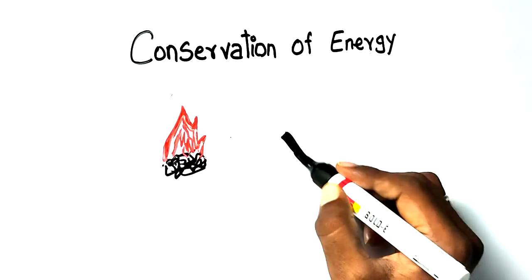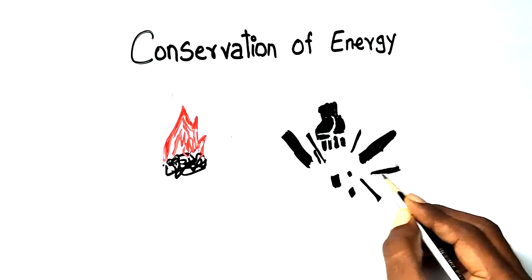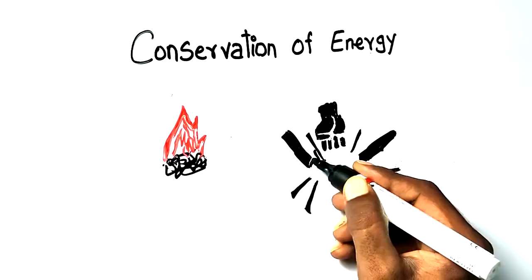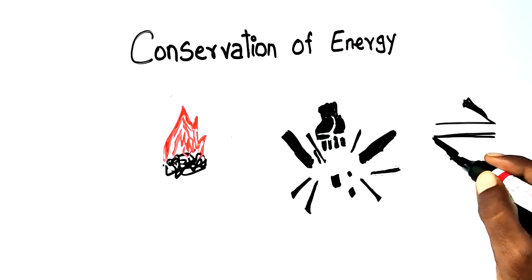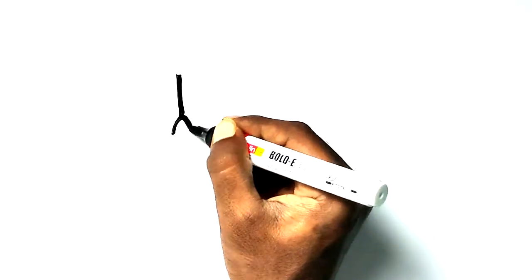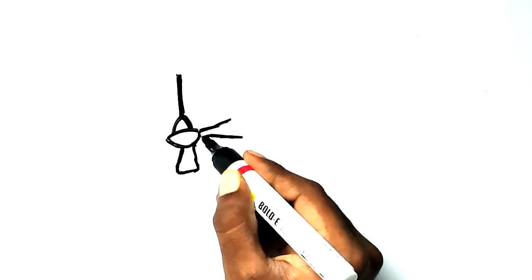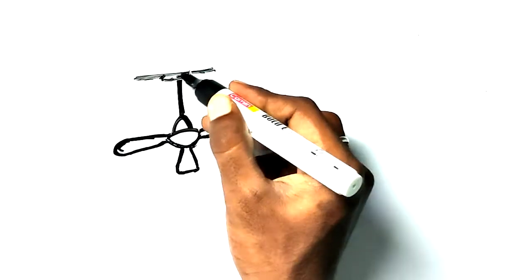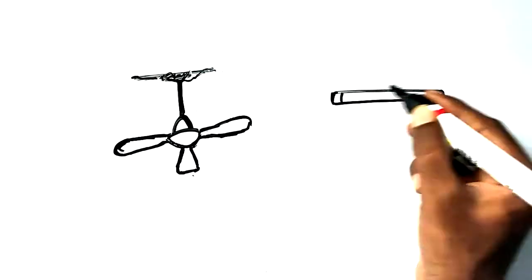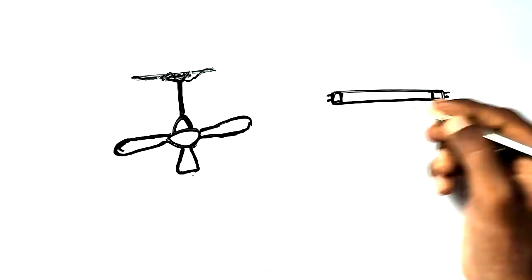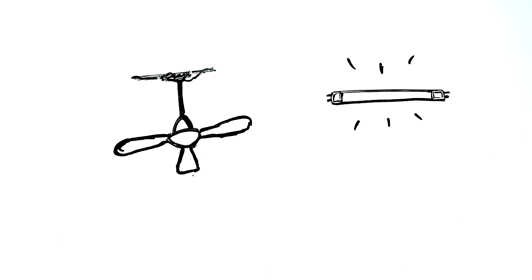We cannot create or destroy energy. For example, we have a fan. It converts electrical energy to mechanical energy. It converts the same energy to light energy.